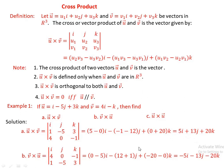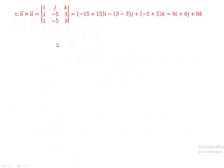For part (c), u cross u equals the determinant of [i, j, k; 1, -5, 3; 1, -5, 3]. This gives 0·i plus 0·j plus 0·k = 0. So u cross u = 0. Since u is parallel to itself, the cross product of any vector with itself is always zero.